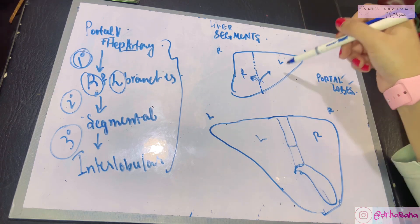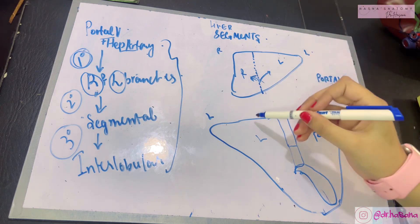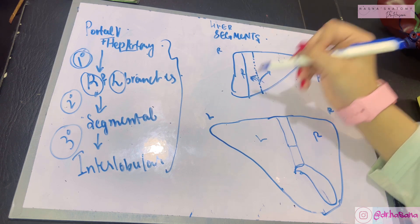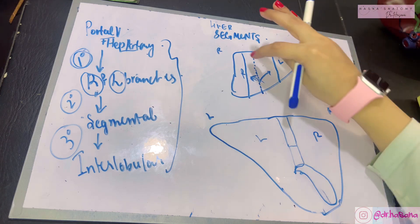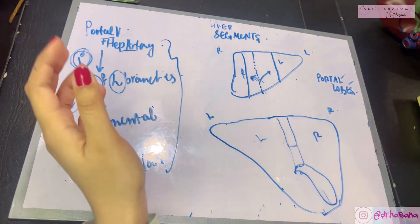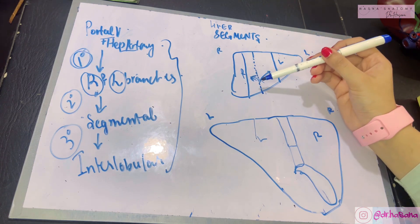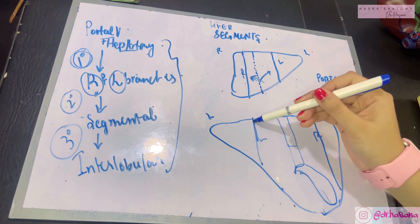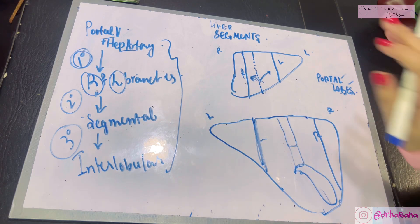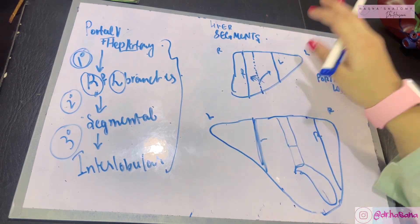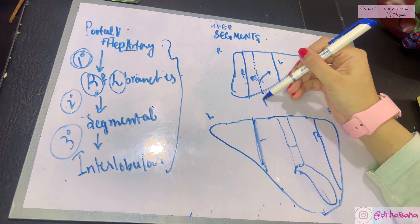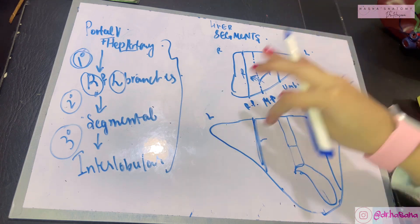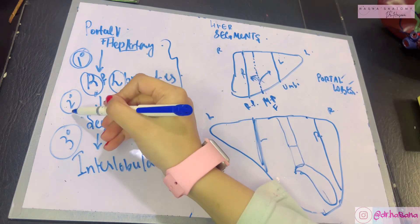Now these right and left lobes are further divided by two additional lines: the right portal fissure and the left umbilical fissure. These lines cannot be seen anatomically, but they exist. They divide your right and left functional lobes into medial and lateral divisions, giving us four divisions of the liver in total — created by the main portal fissure, the right portal fissure, and the umbilical fissure.